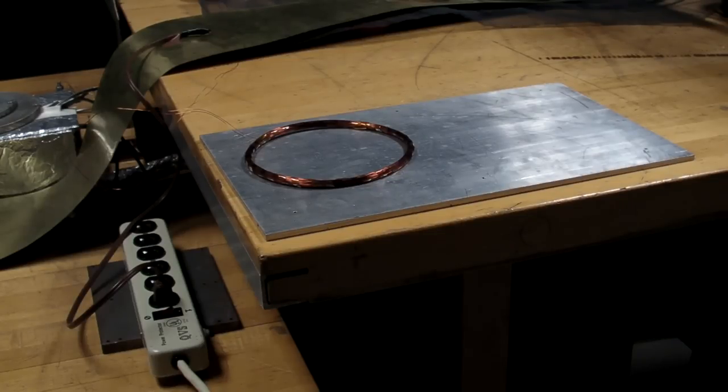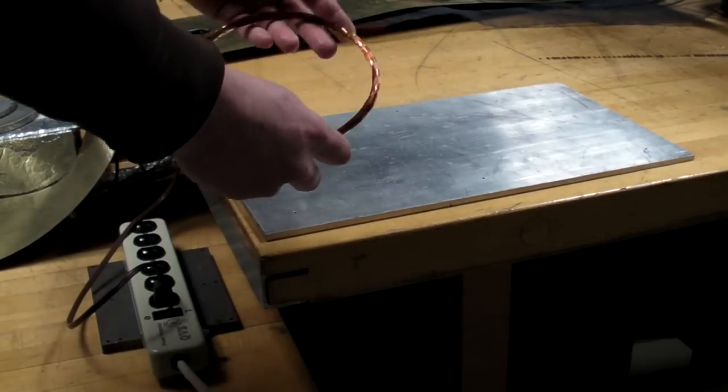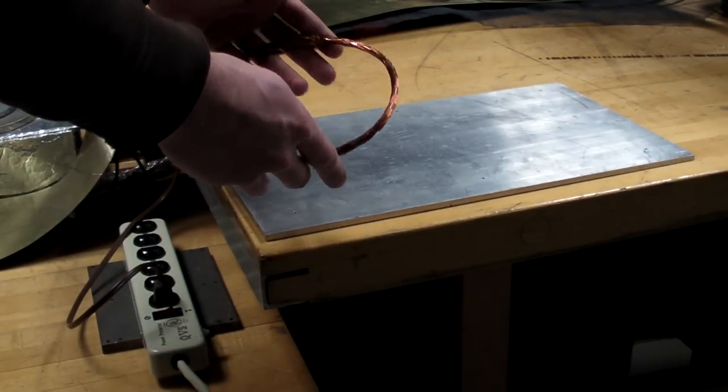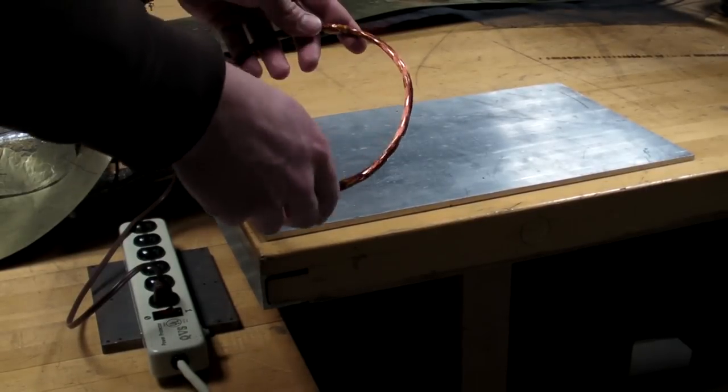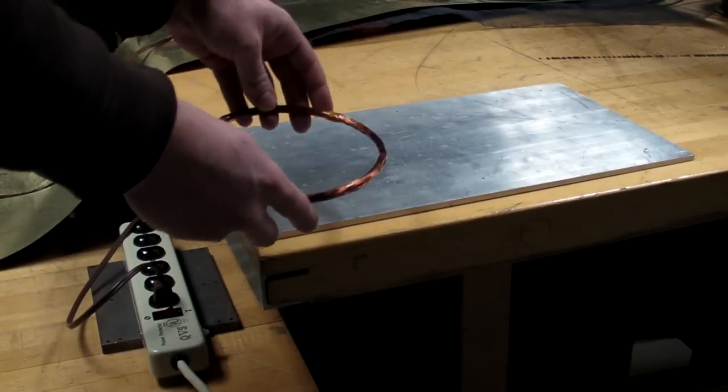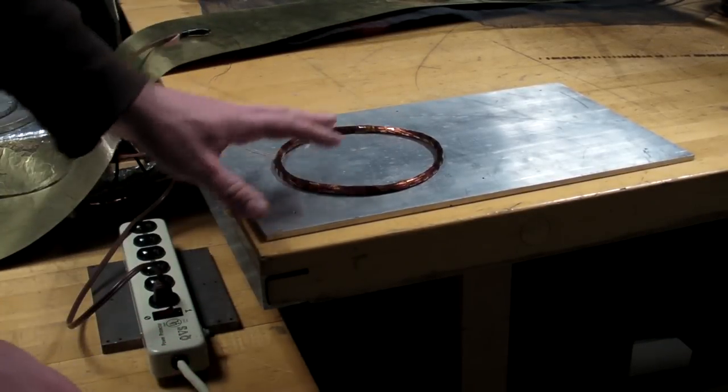A very common, easy, and entertaining way to demonstrate Lenz's Law is to create a coil of wire like this. I made this several years ago. It's six inches diameter and 200 turns of 28 gauge magnet wire.